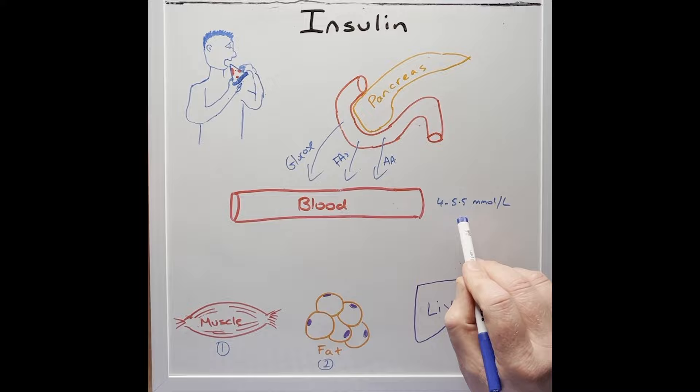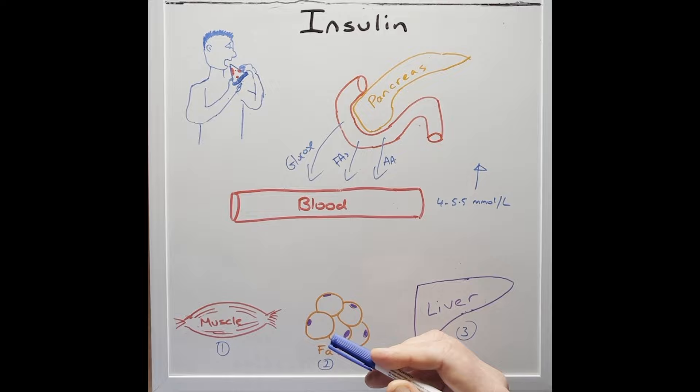So within the blood, before the meal, blood glucose level is in a range of 4 to 5.5 millimoles per litre. But as the glucose floods into the blood, this level will start to rise.